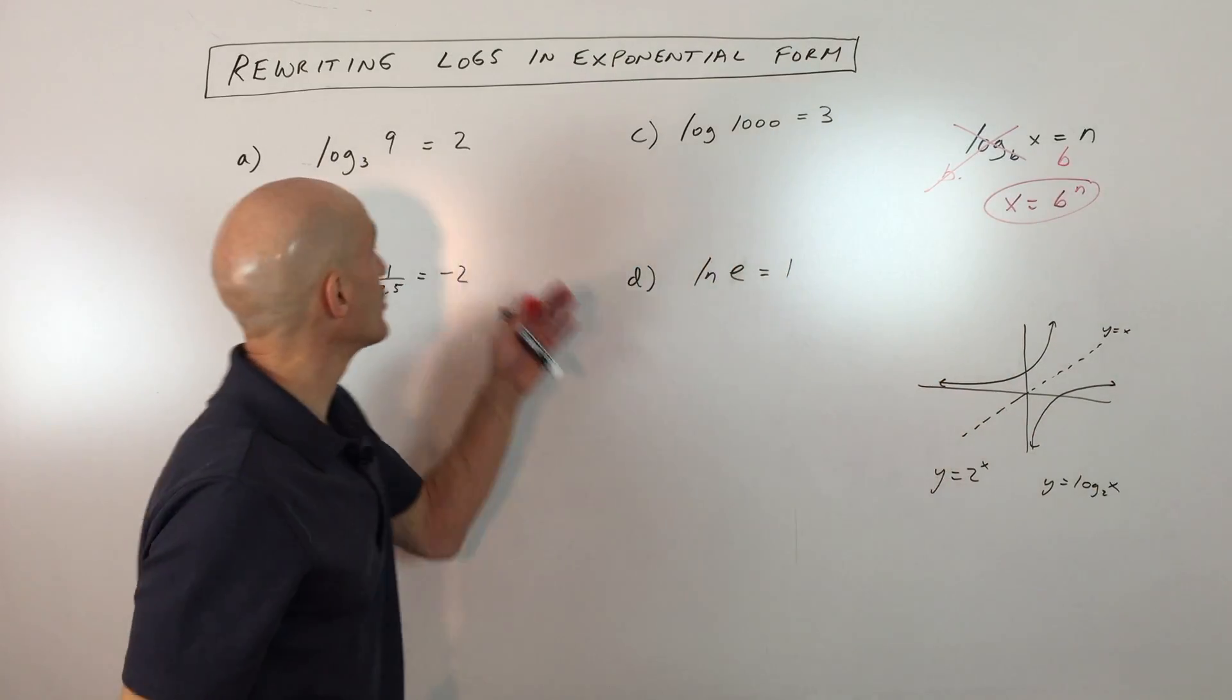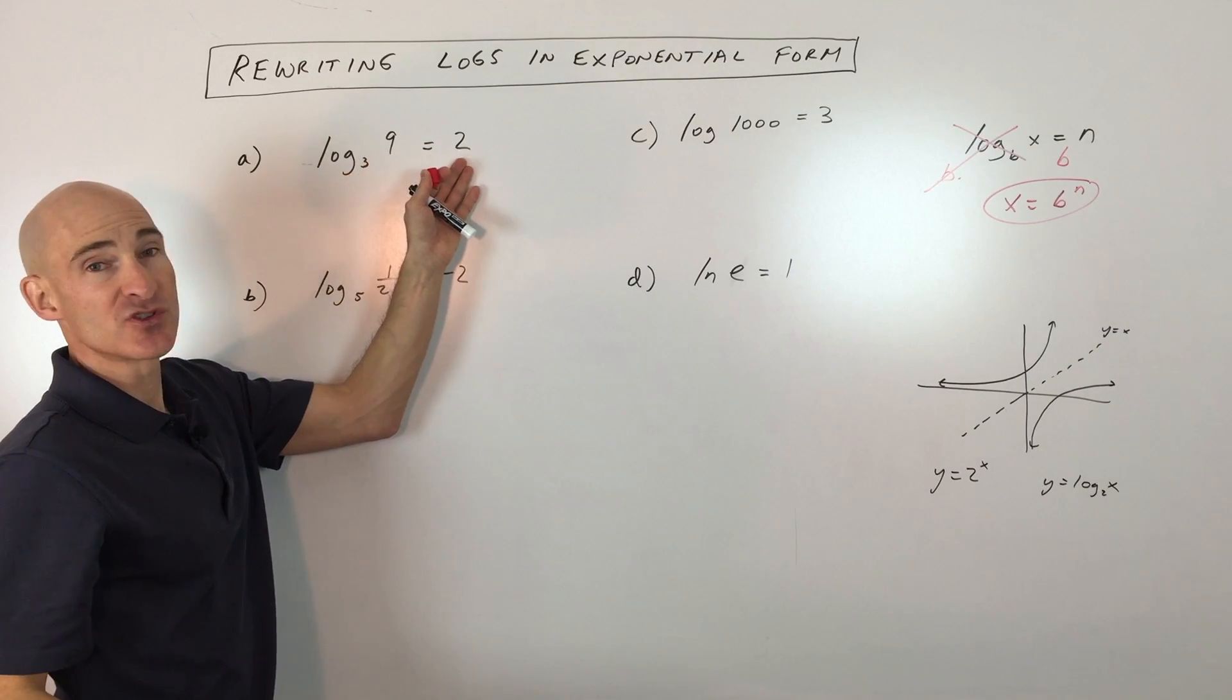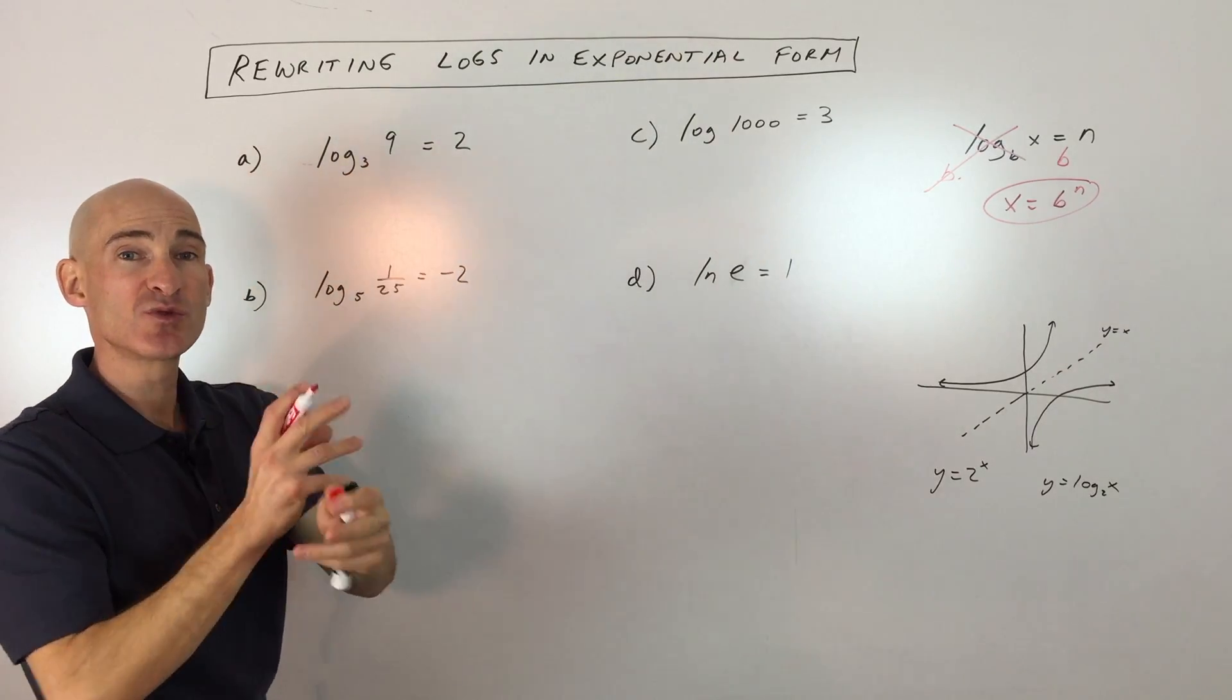Okay, let's look at some examples and I'll show you how this works. So in this first example, log base 3 of 9 equals 2. This is a true statement. All we're going to do is just rewrite it.